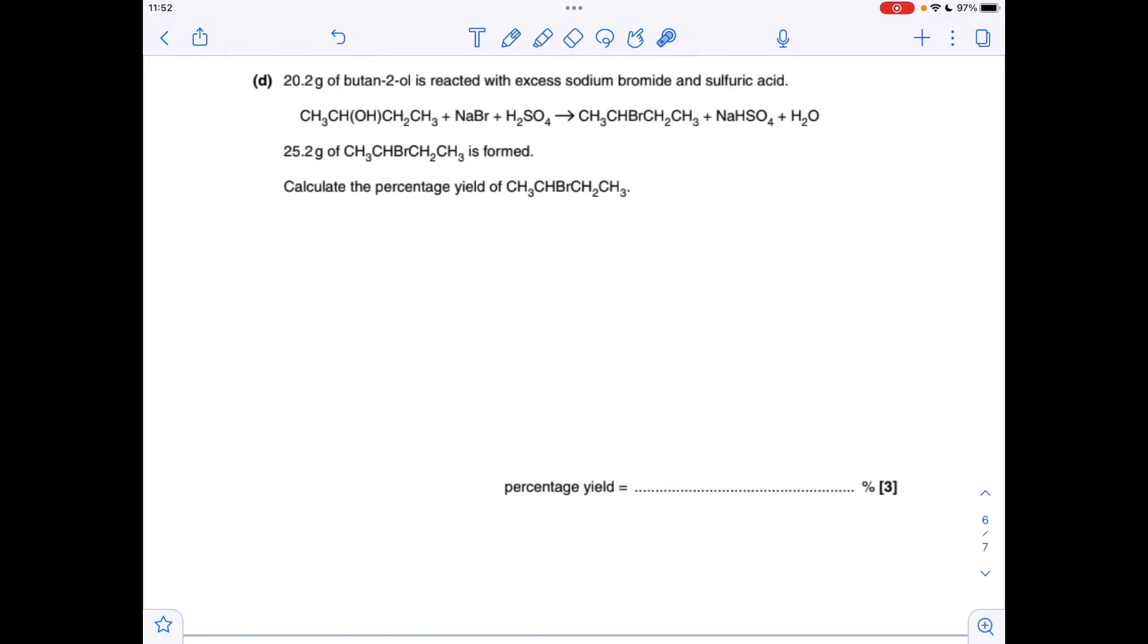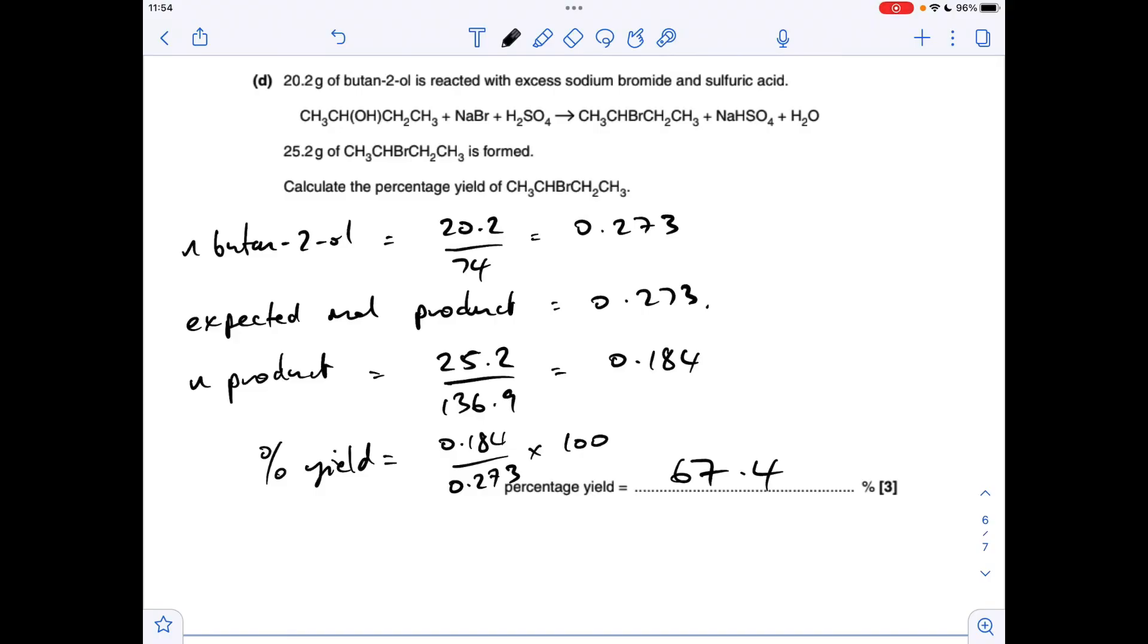The final question, just a percentage yield calculation. So the first thing I'm going to work out is the moles of butane 2-ol that's been reacted in this reaction, which is mass over MR, 0.273 moles. So look at the ratio, 1 to 1, so you'd expect to make that many moles of this haloalkane. So what we need to do now is work out how many moles of this was actually formed, so it's going to be the mass over the MR of that. That comes out at 0.184 moles, and then to turn it into percentage yield, we do the actual moles divided by the expected moles times 100, which comes out at 67.4%.